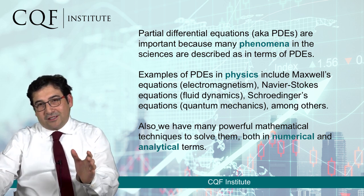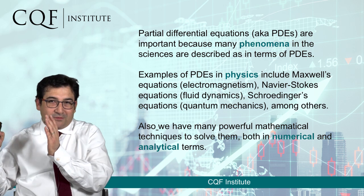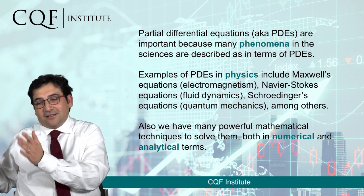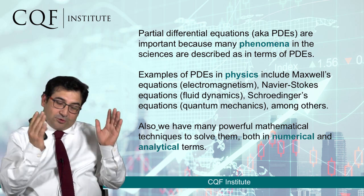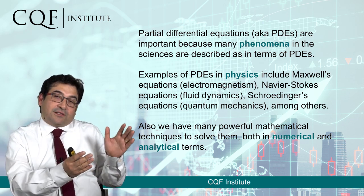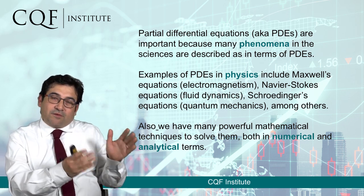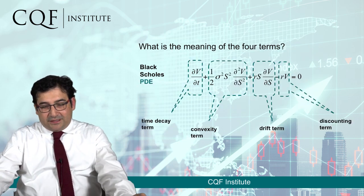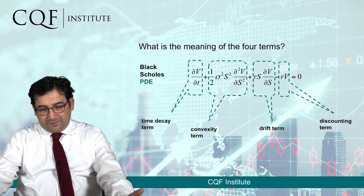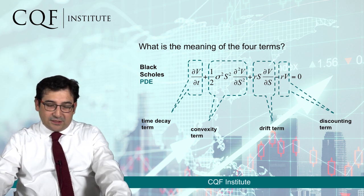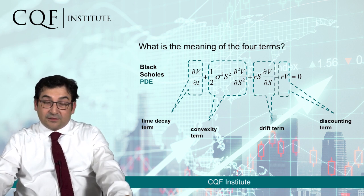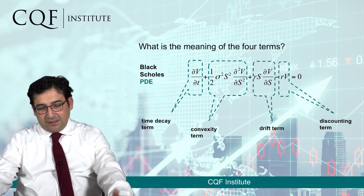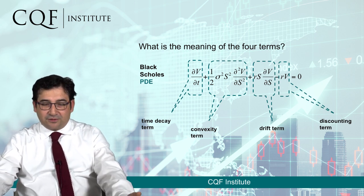The techniques we use to solve problems in physics — be it electromagnetism, fluid mechanics, or anything else — we can now use to solve problems in finance, in particular the pricing of financial derivatives. The Black-Scholes PDE itself has different terms, and these terms have different interpretations. As with all PDEs, some are the diffusion term, the convection term, and so on.